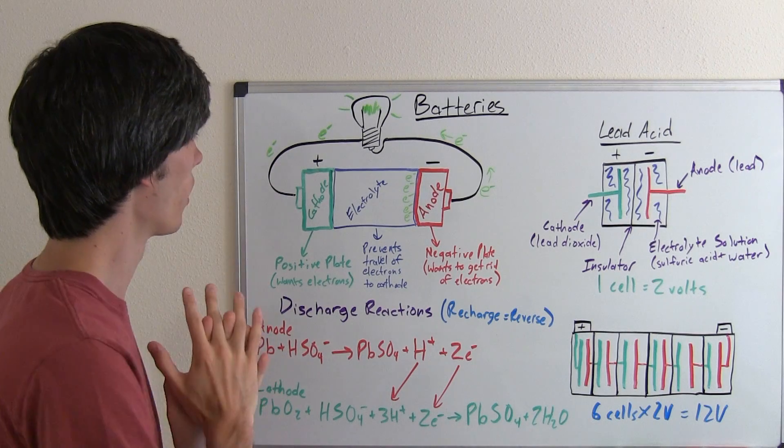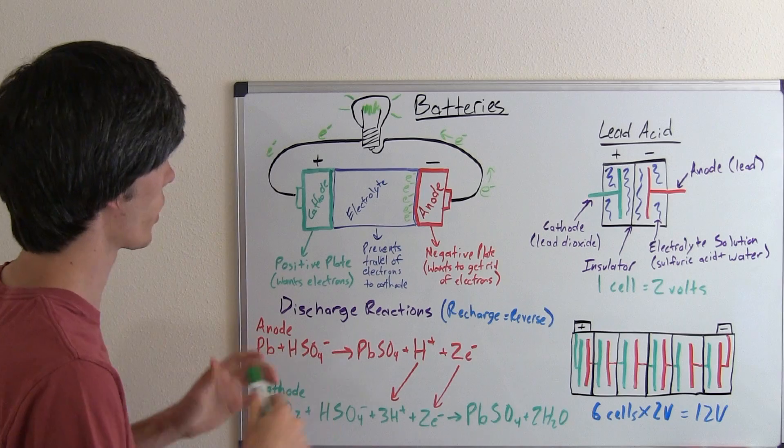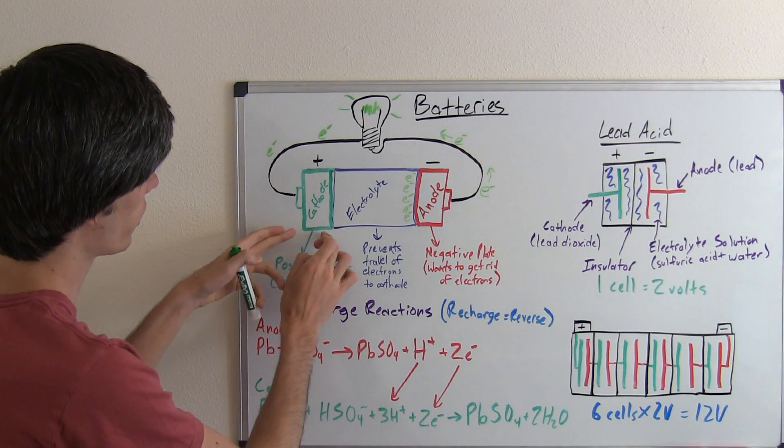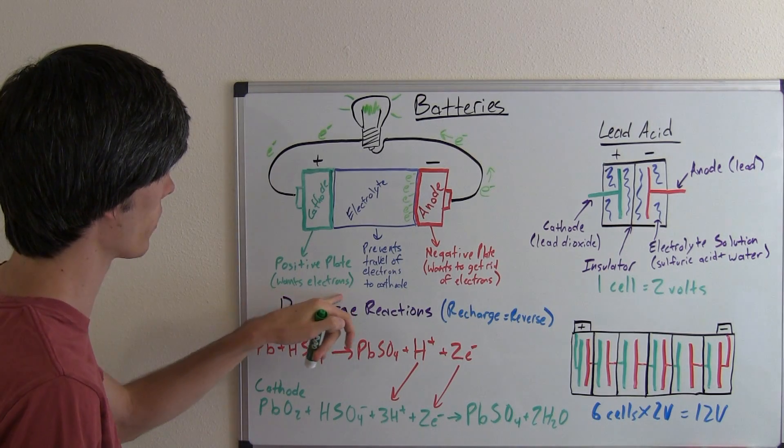The basics of batteries, what we've got going on, it's actually pretty simple. All you want to do is transfer electrons. So what you've got is you've got a cathode, which is a positive plate, and what it does is it wants electrons, so it's lacking electrons.